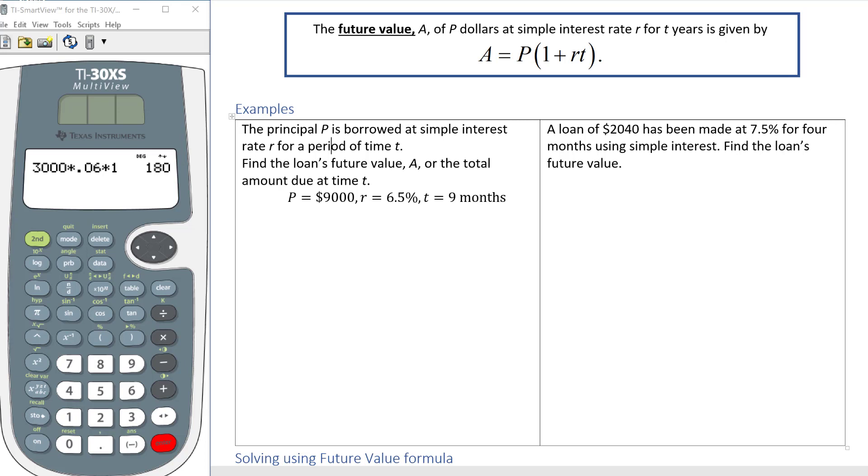The principle P is borrowed at a simple interest rate R for a period of time T. Find the loan's future value A, or the total amount due at time T. So it tells us what P is, it tells us what R is, and it tells us what T is.